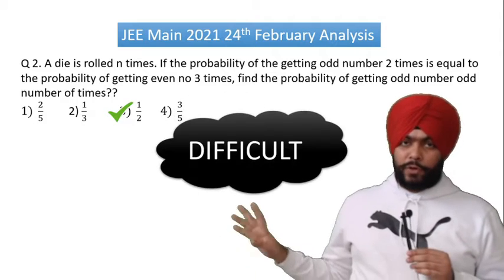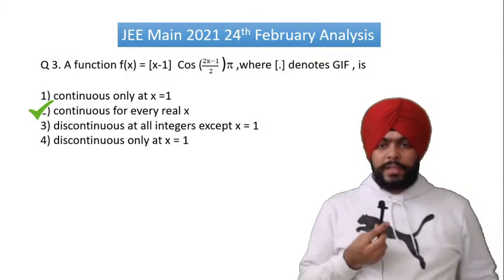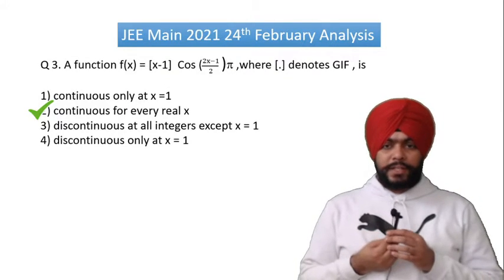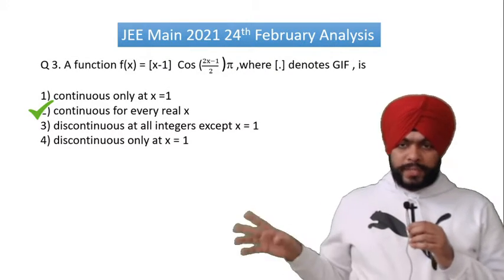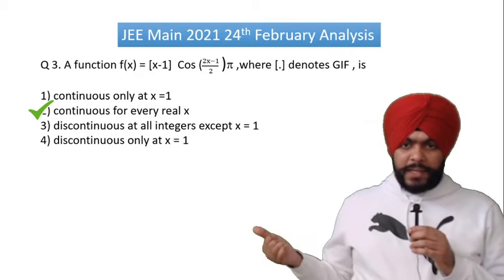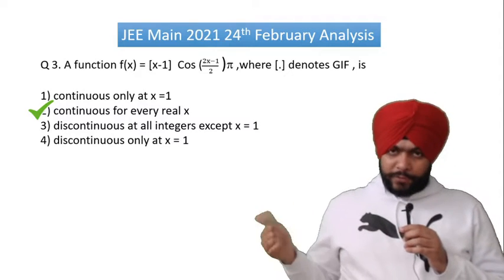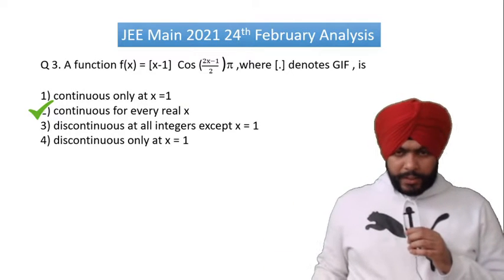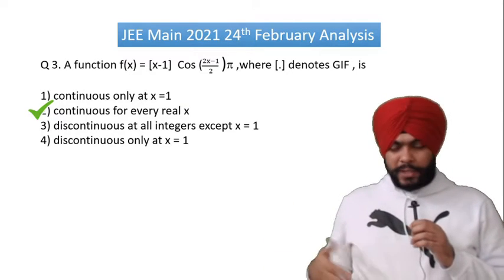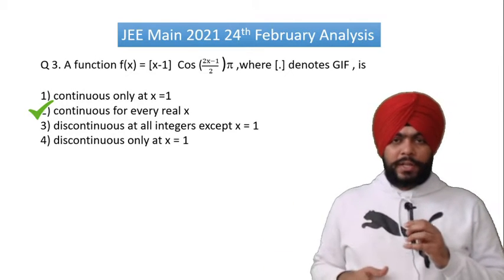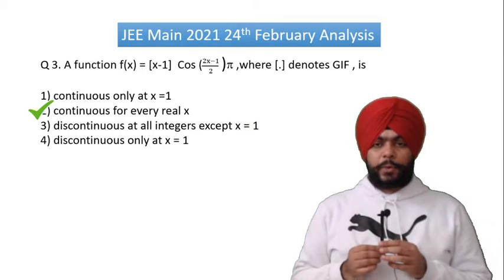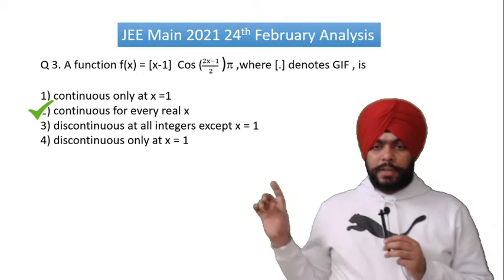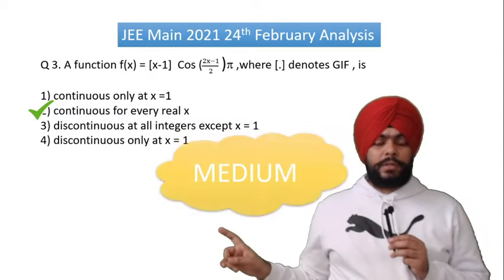Question number 3 is f(x) equal to the greatest integer of (x minus 1) into cos of (2x minus 1) divided by 2π. We have to check continuity, but this is not a very fast question. So this is a medium level question.